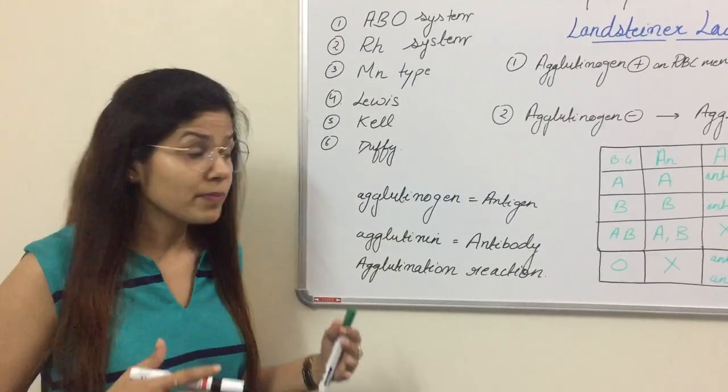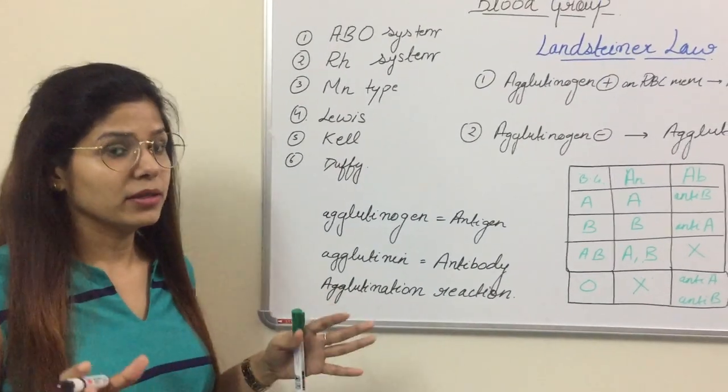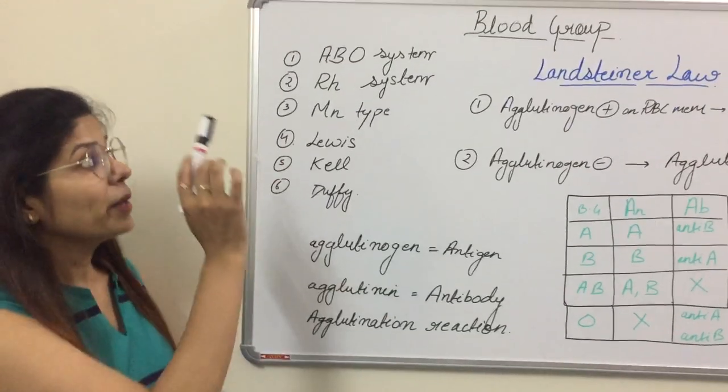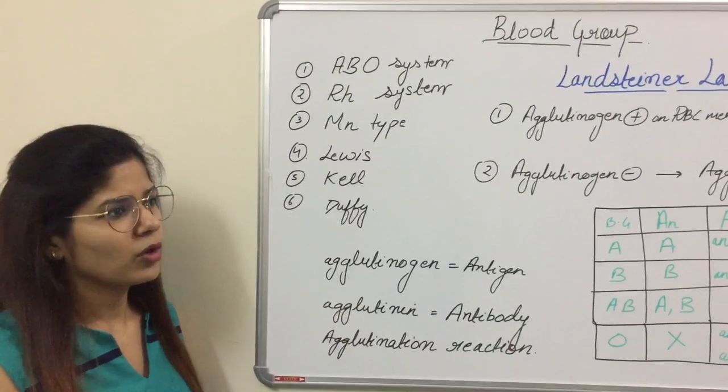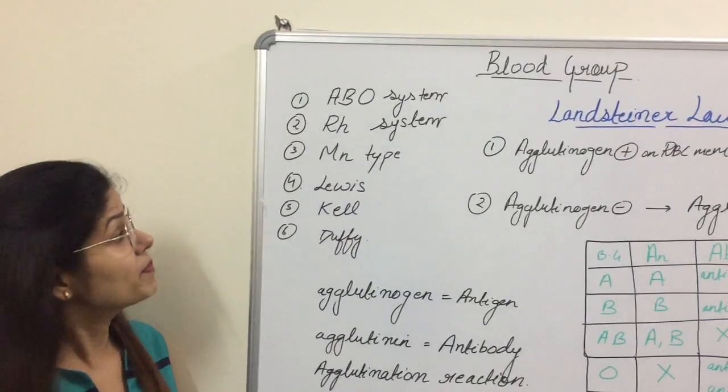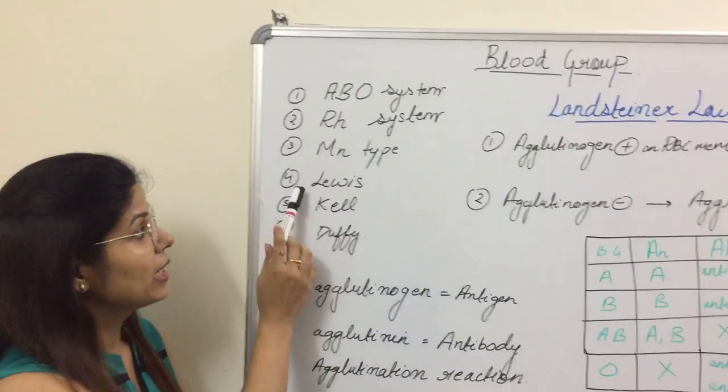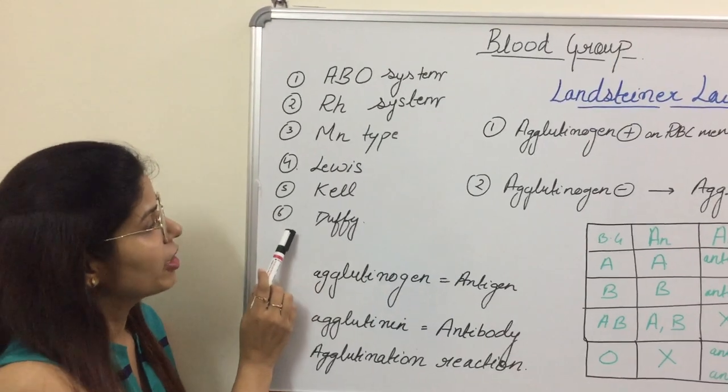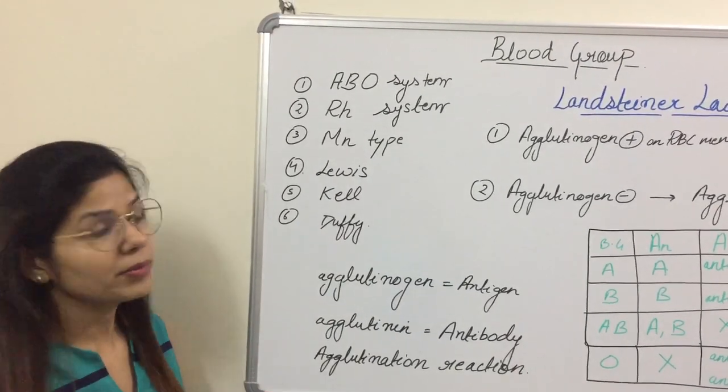There are different types of blood group systems. Here we are focusing on the main blood group systems. There are two main blood group systems, as we all know it's very common: the ABO blood group system and RH group system. The others are MN type, Lewis type, Kell and Duffy. There are others also but these are some important blood group systems.